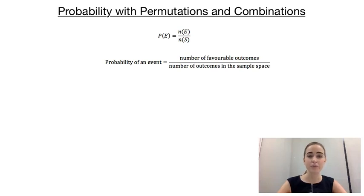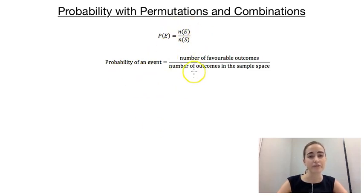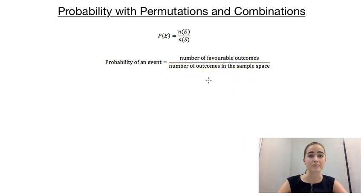In this video I want to have a look at probability problems involving permutations and combinations. Before we start looking at the actual problems we just need to remember the formula for finding probabilities: the probability of an event is equal to the number of favourable outcomes divided by the total number of outcomes in the sample space. So let's jump straight into some examples.